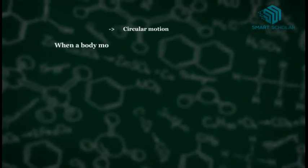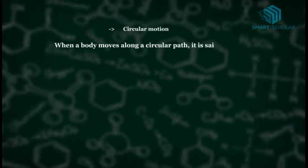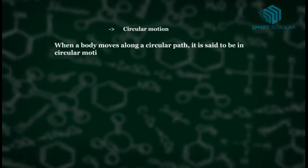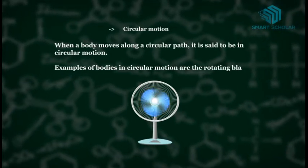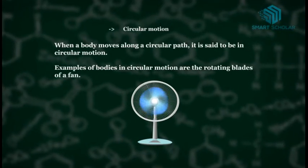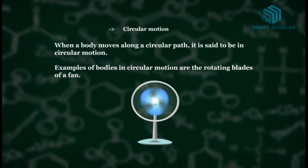Circular motion: When a body moves along a circular path, it is said to be in circular motion. Examples of bodies in circular motion are rotating blades of a fan.